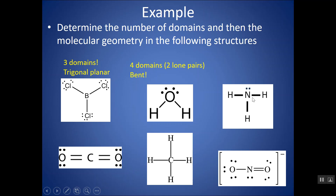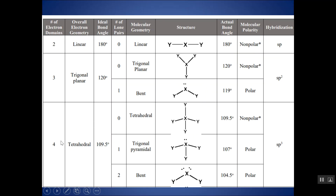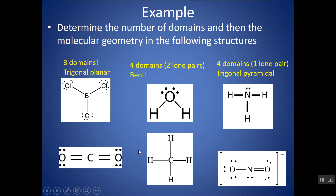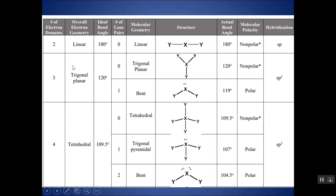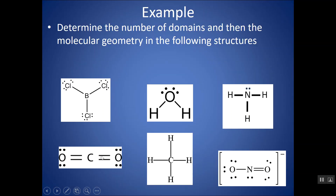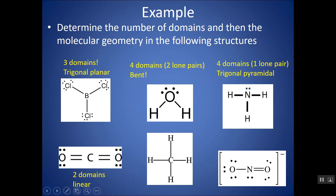This nitrogen has one, two, three, four domains, and one of them is a lone pair — four domains, one lone pair — this is trigonal pyramidal. This carbon on the bottom has one domain here; this double bond counts as one, and this single bond counts as one — so there are two domains. Two domains is always going to be linear. There's no way to have two domains with one being a lone pair. And this carbon has one, two, three, four domains, all of them bonds, so this is tetrahedral.